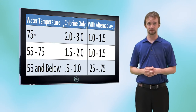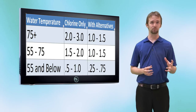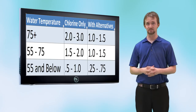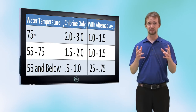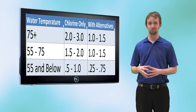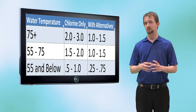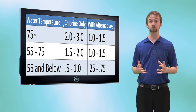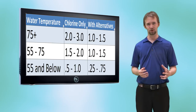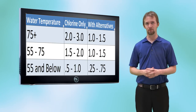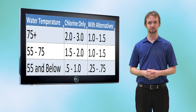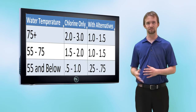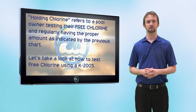In springtime, 55–75°F, a chlorine pool needs to hold 1.5–2 ppm; pools using alternatives only need 1–1.5 ppm. When your pool water drops below 55°F, algae and bacteria both have issues growing because it's too cold, so a regular chlorine system only needs to hold 0.5–1.0 ppm, and with alternatives you only need 0.25–0.75 ppm — you can hold less than one and be okay.